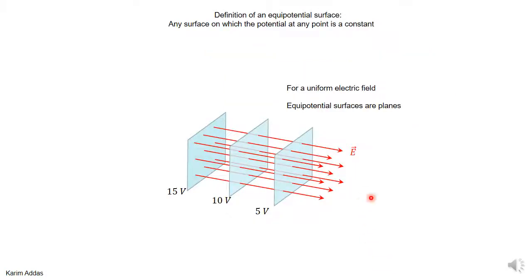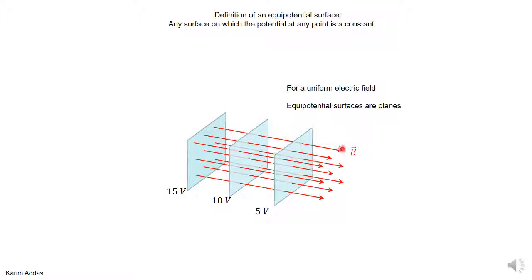This allows us to define equi-potential surfaces. For a uniform electric field in three dimensions, the equi-potential surfaces are planes — any plane perpendicular to the electric field vectors has the same potential value everywhere on it. For instance, one plane might have a potential of 5 volts, meaning every point on that plane is 5 volts; another plane might be 10 volts. The electric field vectors always go from the region of high potential to the region of low potential.